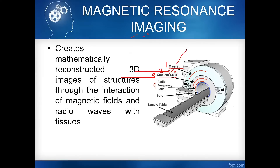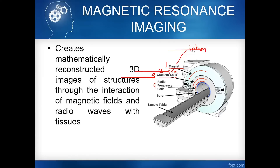Ang external magnetic field po natin ay hindi uniform — ito guys yung tinatawag nating inhomogeneity. Ang ibig sabihin nun, hindi uniform yung ating external magnetic field. Nangyayari kasi yan kasi, based on the book, hindi nila ma-perfect yung pag-construct ng magnet coil. Kung gusto mong maging uniform yung external magnetic field, dapat ang distances between the coils are the same. Kaso hindi nila ma-perfect yung distances na yun, kaya nagkakaroon tayo ng magnetic field inhomogeneity, or non-uniformity ng external magnetic field.